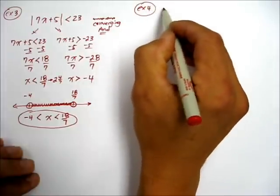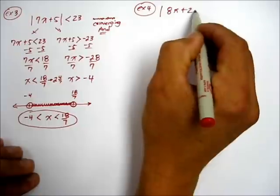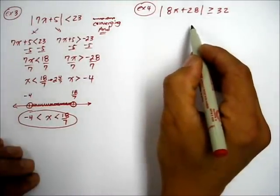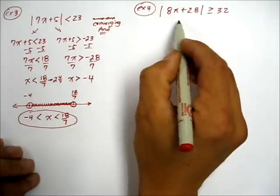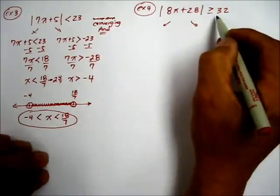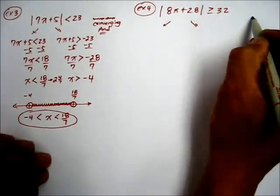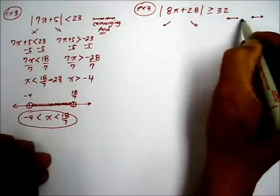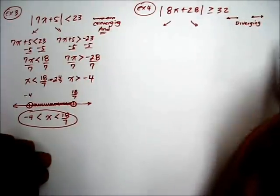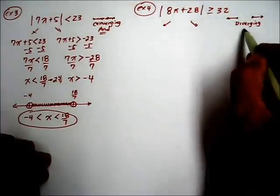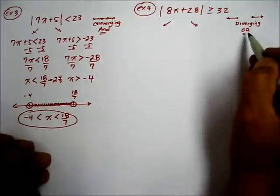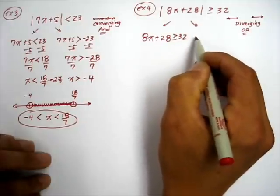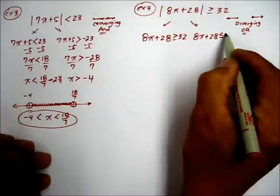Now let's try Example 4 on your own: absolute value of 8x + 28 ≥ 32. You could put the video on pause. To solve this inequality, again there are two possible solutions. Whatever this is, it's greater than 32, and its opposite means it's going to be less than a negative. So this time we have a diverging line — this is not an 'and,' this is going to be an 'or' situation. We set it up as 8x + 28 ≥ 32, or 8x + 28 ≤ -32.